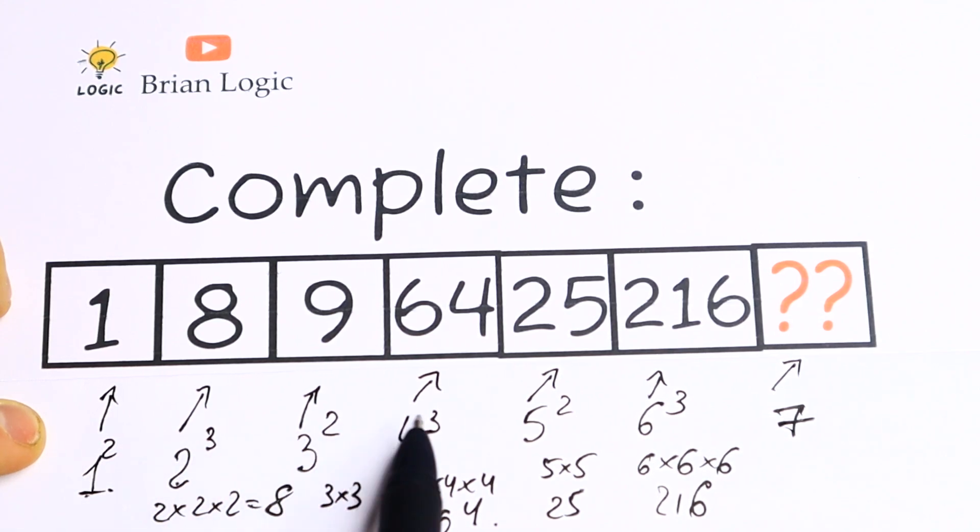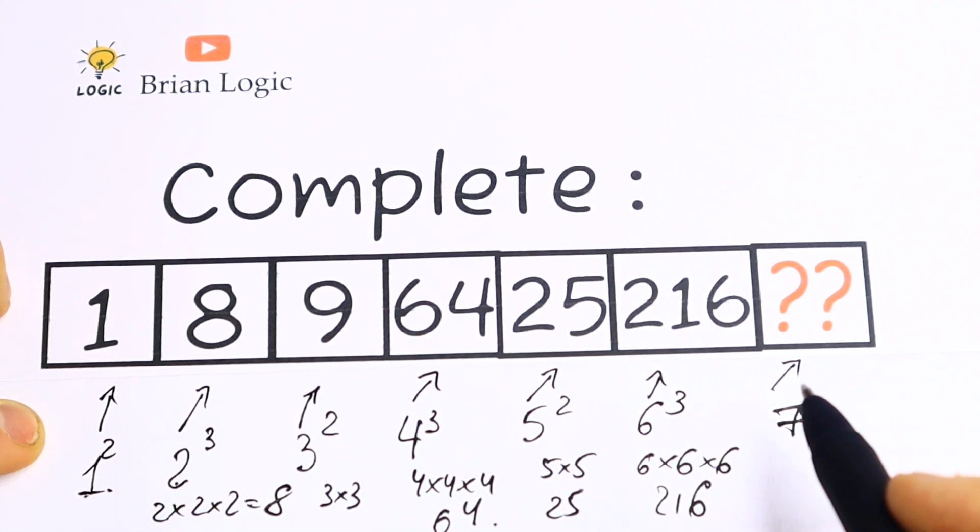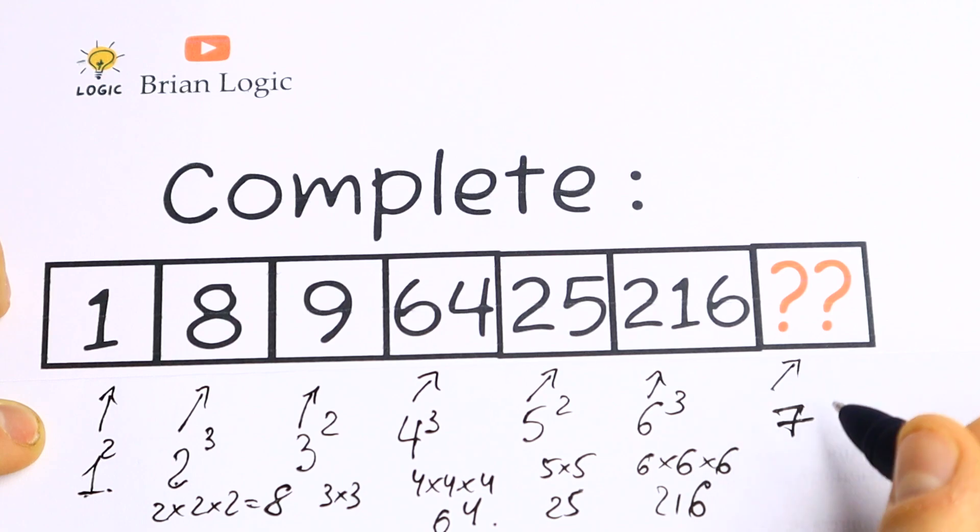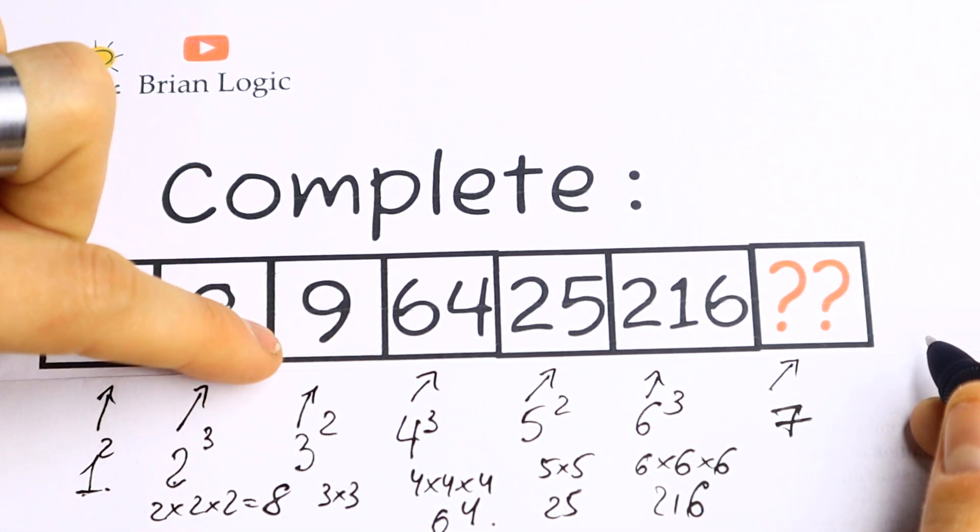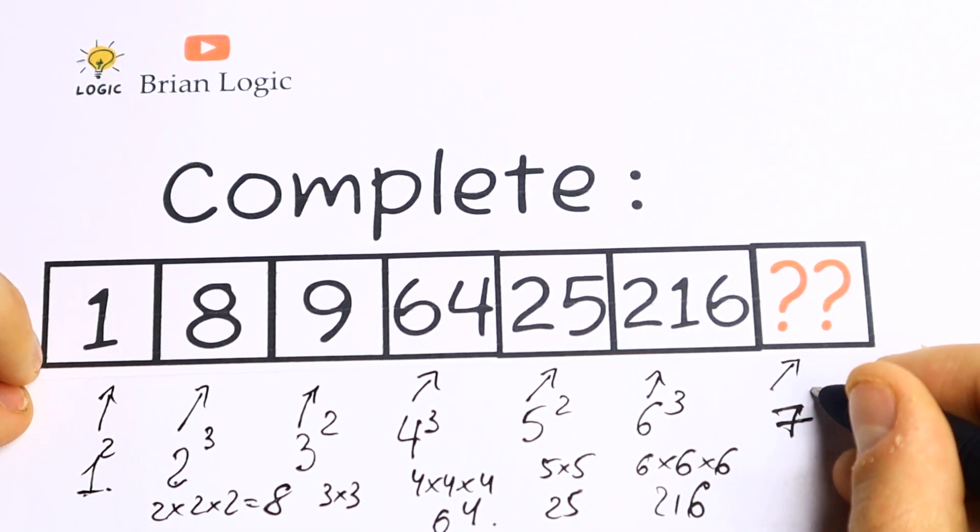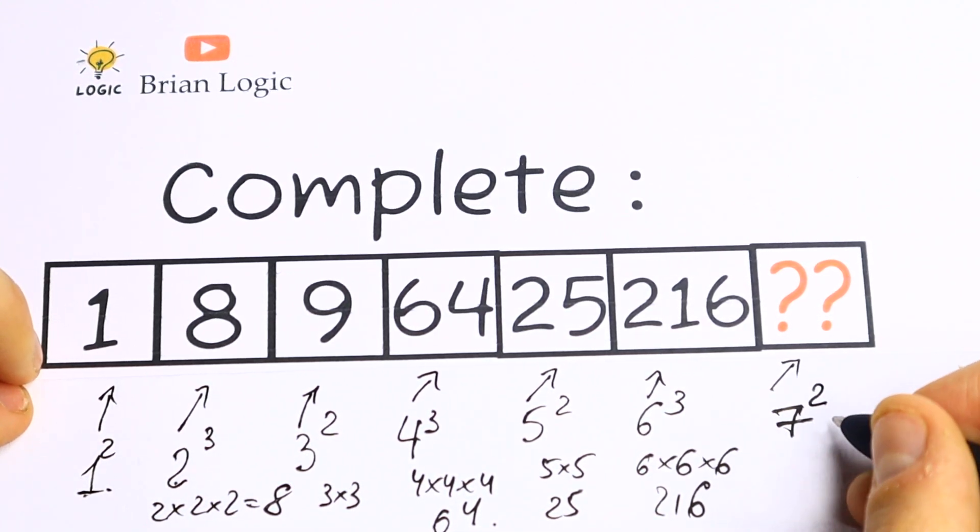We have 2, 3, 2, 3, 2, 3. So it's not hard to see that we have like an order. 2 then 3, so even number, odd number, even odd, even odd. So it's not hard to see that this 7 has the second power.